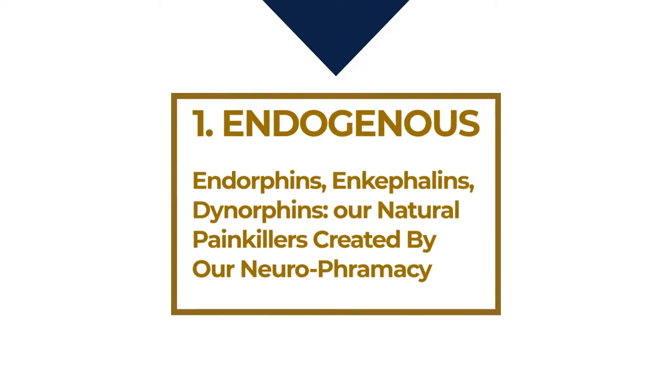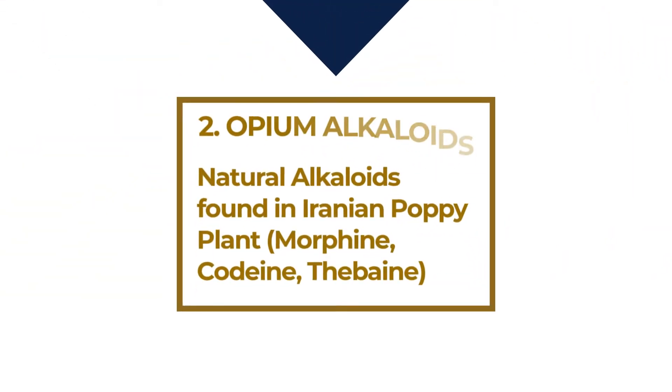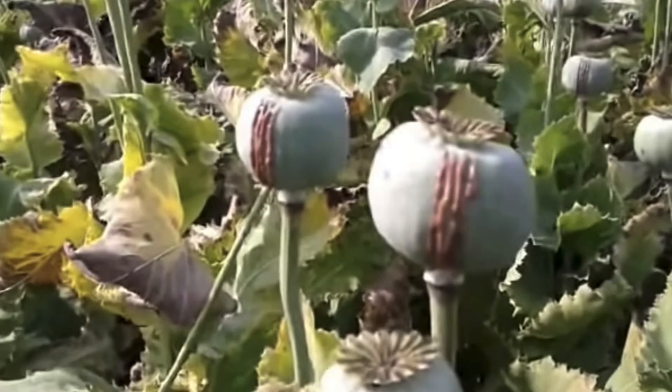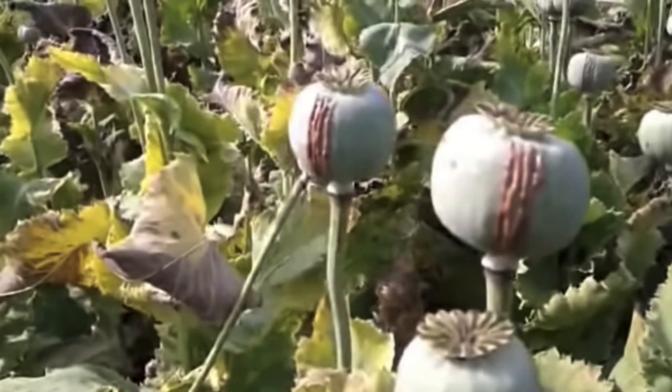The next class is called opium alkaloids. These are opioids that come from the opium poppy plant — things like morphine, thebaine, and codeine. These literally come from the opium poppy plant.